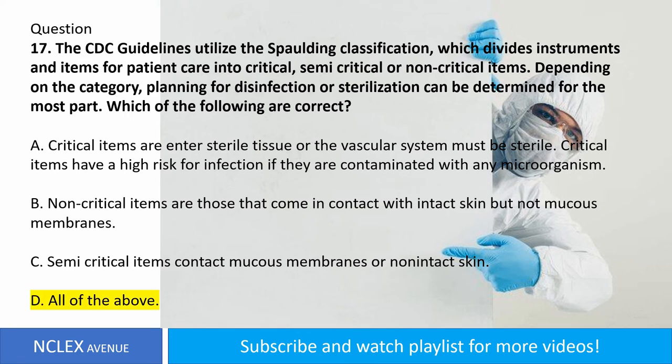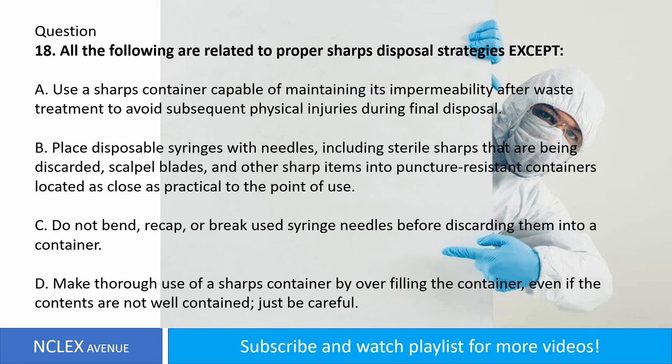Question number eighteen. All the following are related to proper sharps disposal strategies except: A. Use a sharps container capable of maintaining its impermeability after waste treatment to avoid subsequent physical injuries during final disposal. B. Place disposable syringes with needles, including sterile sharps being discarded, scalpel blades, and other sharp items into puncture-resistant containers located as close as practical to the point of use. C. Do not bend, recap, or break used syringe needles before discarding them into a container. D. Make thorough use of a sharps container by overfilling the container, even if the contents are not well-contained, just be careful. Answer: letter D.